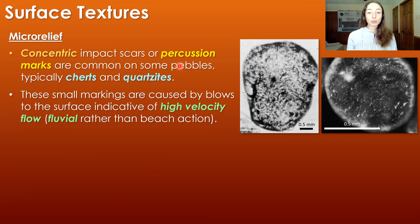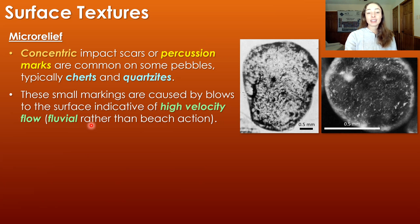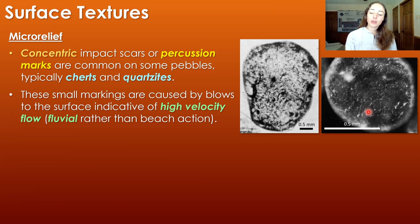Percussion marks are concentric impact scars that are common in pebbles like cherts and quartzites — silica material. These small markings are caused by blows to the surface indicative of high velocity flow, meaning they indicate a fluvial rather than a beach depositional environment. Percussion marks, like striations, can also be macro or micro.